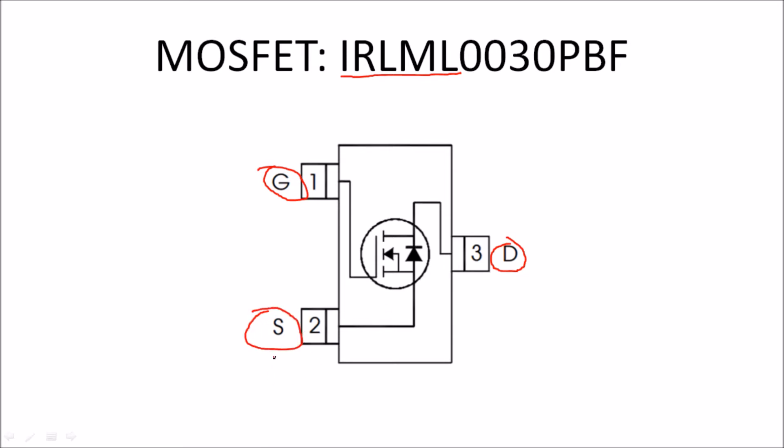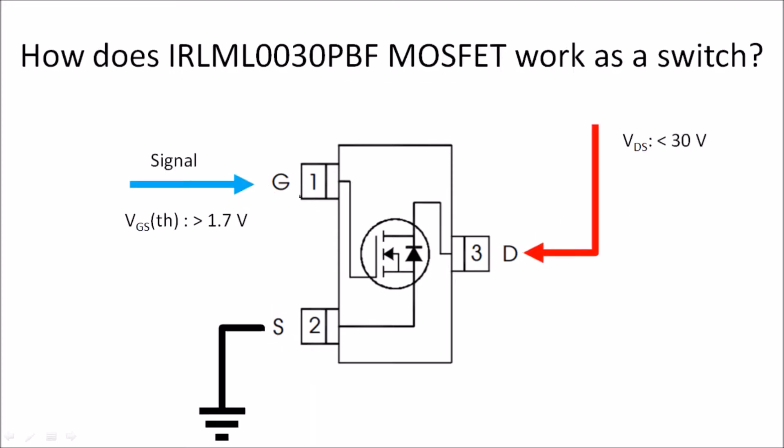Usually the source goes to ground and the input voltage—it could be plus 5 volts, plus 12 volts, whatever input voltage this MOSFET can handle—goes into the drain. Turning on the switch, that is this MOSFET, is controlled using this gate. As long as we have a gate signal more than 1.7 volts, it conducts.